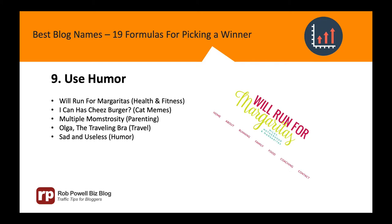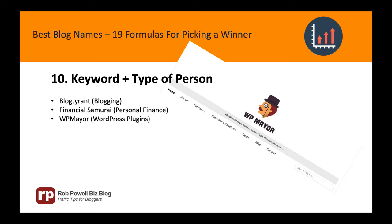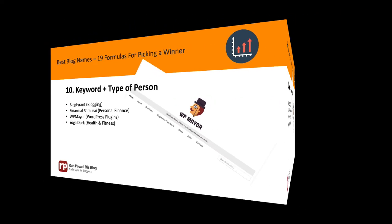Formula 10: Your keyword plus a type of person. A keyword combined with a type or rank of person is a well-used branding technique in the business world — think Storage King or Captain Snooze — and it'll work for your blog as well. Here are some examples: Blog Tyrant, Financial Samurai, WordPress Mayor, Yoga Dork, Geek Dad, Money Geek.